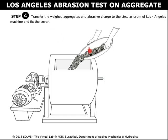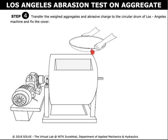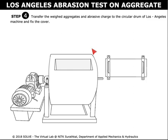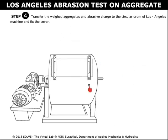Click here to rotate the machine. Now click on the aggregates to transfer them to the drum, and then click on the abrasive charge to add them to the drum. Close the lid of the cylinder.